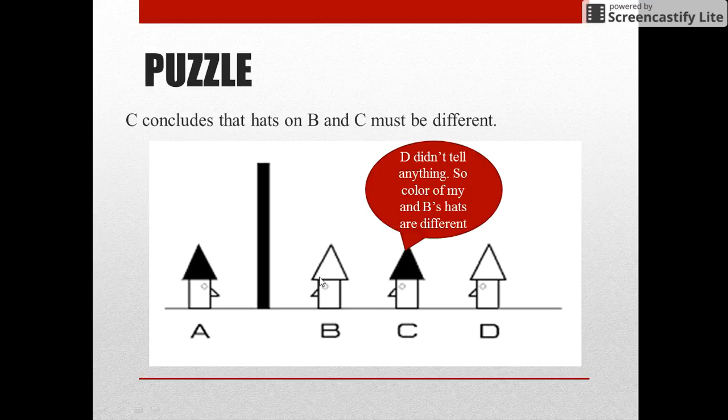So the color of his hat must be opposite to that of B. Since B is wearing a white hat, the color of the hat of C must be black.